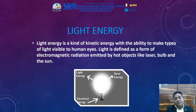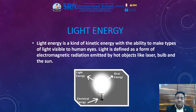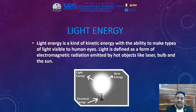Now let us discuss another form of energy — light energy. Light energy is a kind of kinetic energy with the ability to make types of light visible to the human eyes. Different objects have different colors. A particular wavelength of light is absorbed by the object and a particular wavelength is reflected by the object. The wavelength of light reflected by the object is what is visible to our eyes. For example, if an object is of red color, it means that the object is reflecting the red color of light.